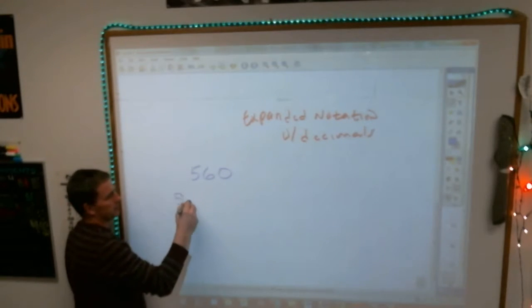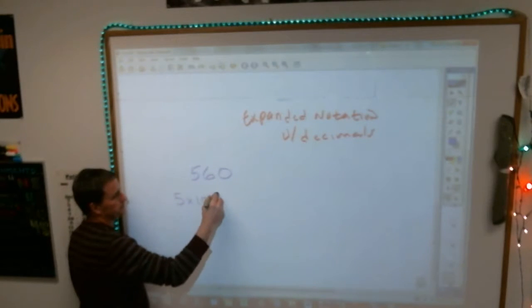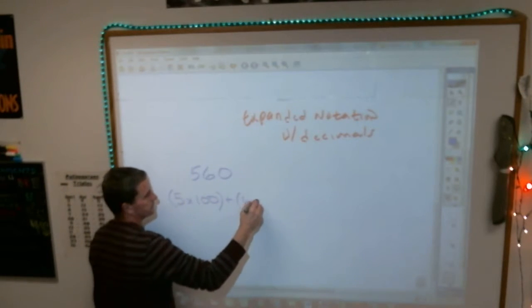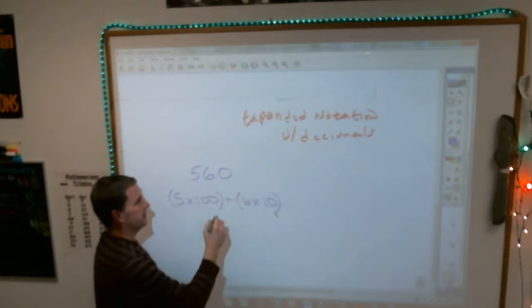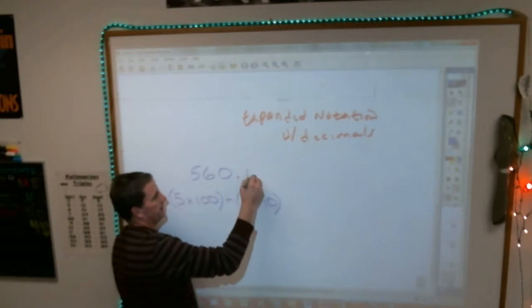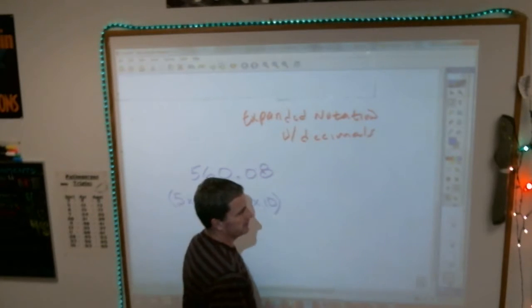5 times 100 plus 6 times 10. 6 times 10, perfect. Well, now we are adding on their decimals. Let's say I have then .08 as my decimal.